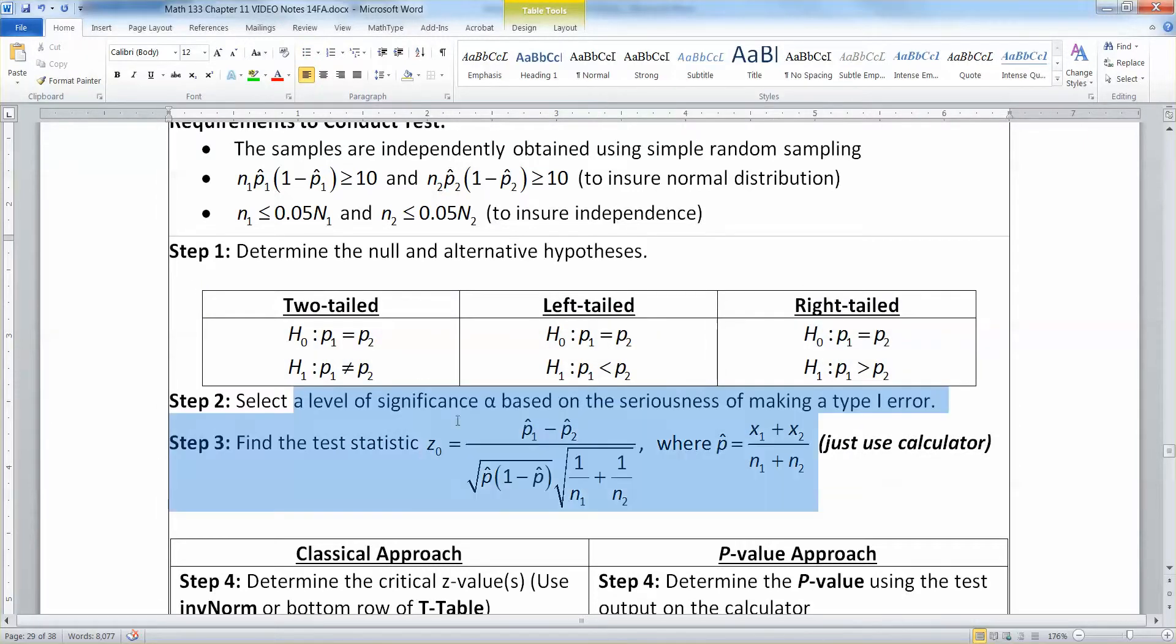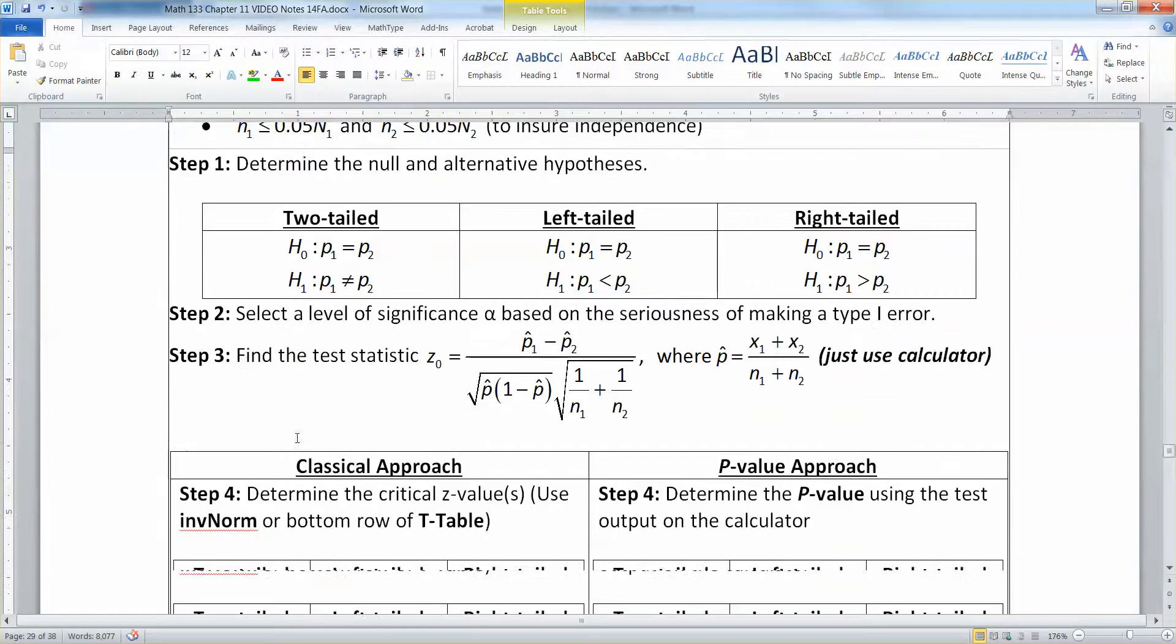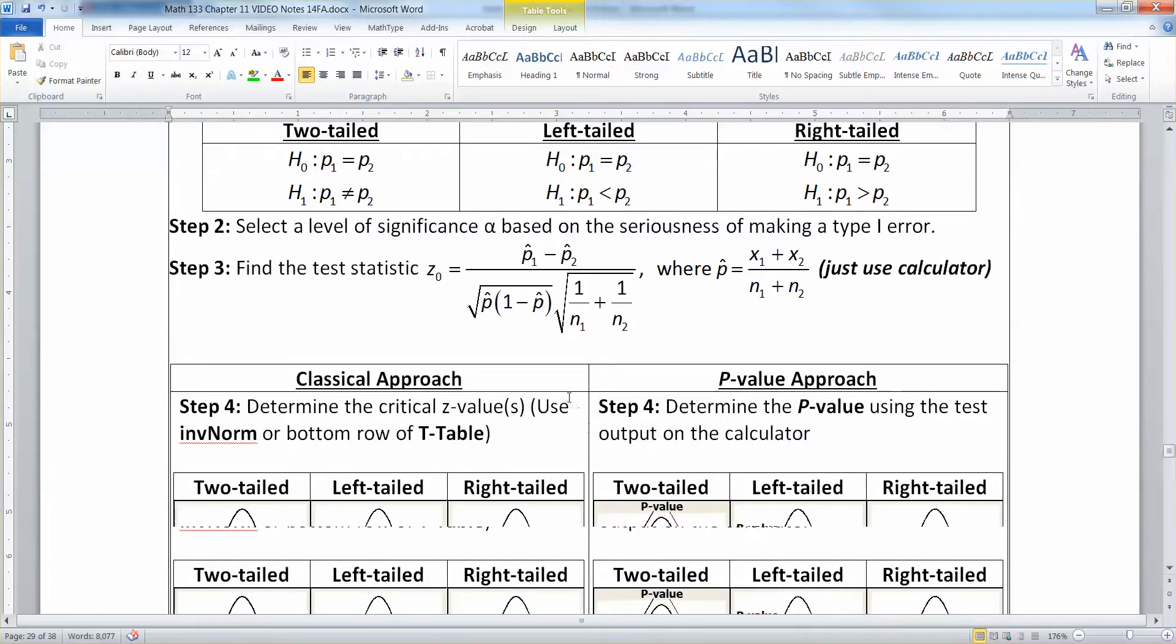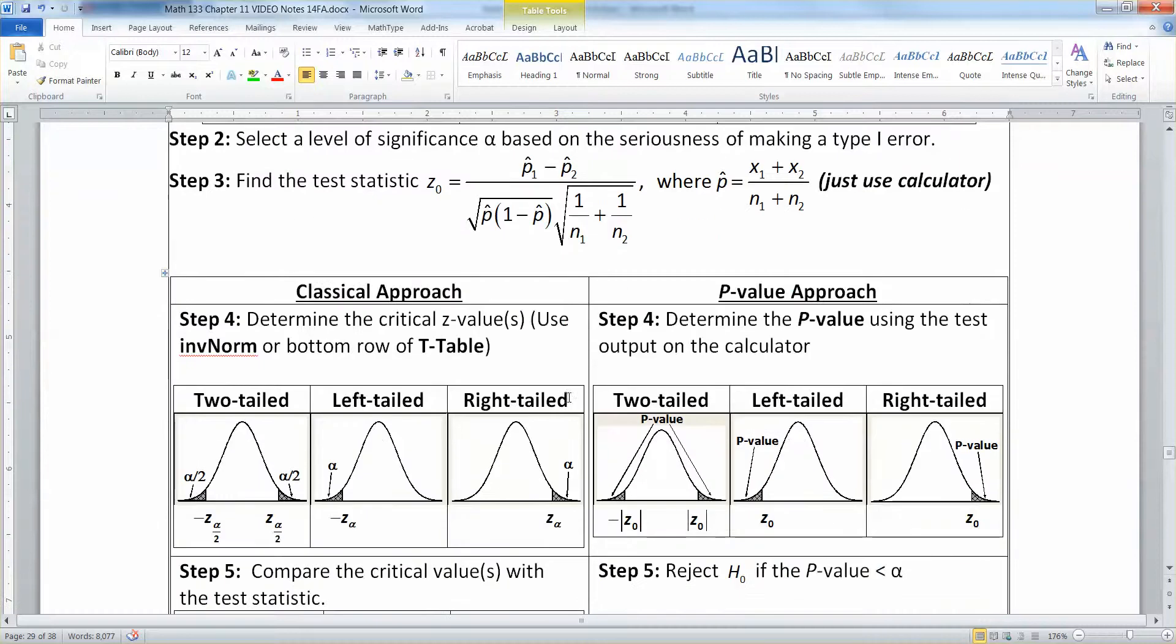And then alpha everybody's favorite step and then the test statistic we're just going to use the calculator to do it for us. It's just too annoying on its own to do. And then we have the same steps 4 and 5 and 6 that we've had all along.